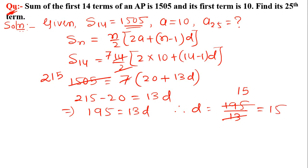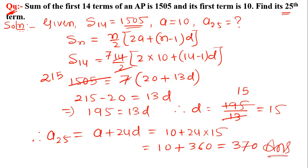To find its 25th term, therefore a25 equals a plus 24d, which equals 10 plus 24 into 15, equals 10 plus 360, equals 370, which is the required answer.